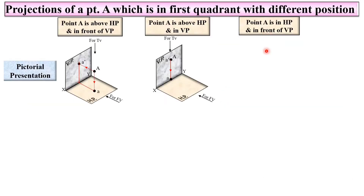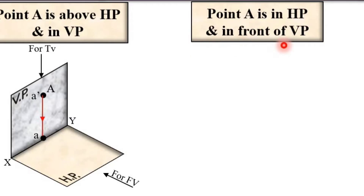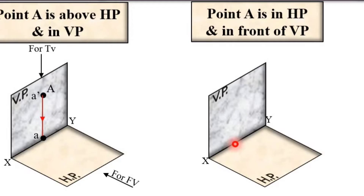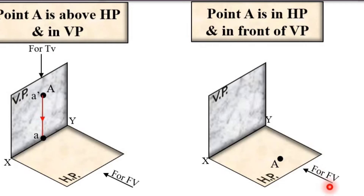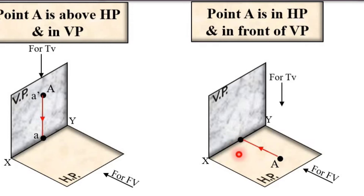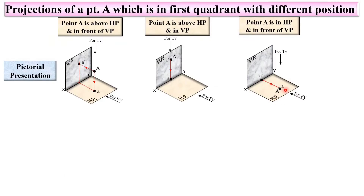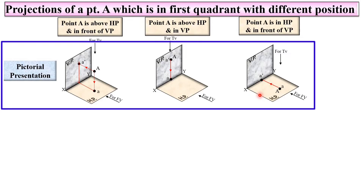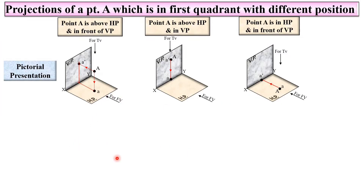Consider Case 3: point A is in HP and in front of VP. Here point A is in HP and in front of VP. This is the position for the observer in the case of front view and in the case of top view. If you look from the front view you will see A dash on the VP, and for the top view you will see point A on the HP. This is the pictorial presentation, but in the examination you have to draw the 2D figure.